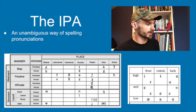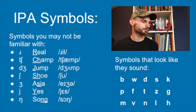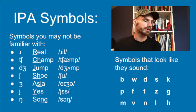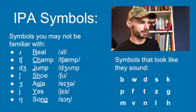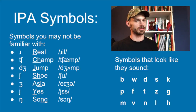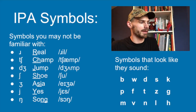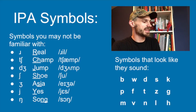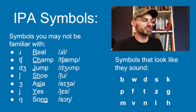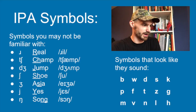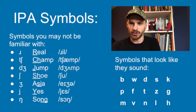Some symbols in the IPA are already familiar to you: b, p, m, w, f, v, d, t, n, s, z, l, k, g, h. There are other symbols you're probably not familiar with, or they represent sounds you wouldn't expect. For example, the 'r' sound looks like an upside-down r in the IPA. The 'ch' sound looks like a t and a stretched-out s. 'j' as in 'judge' is a d and a special symbol.